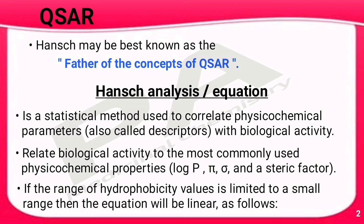Hansch analysis or the Hansch equation is a statistical method used to relate biological activity with physico-chemical parameters, which are otherwise called descriptors. It is a mathematical model used to correlate physico-chemical properties with biological activity. The physico-chemical properties used are log P, pi, sigma, and steric factors.